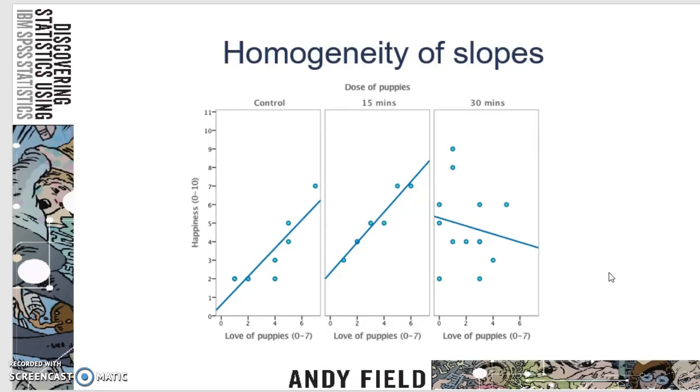In other words, do the slopes look the same? It's the relationship between the dependent variable and the covariate is the same in all the groups, and that is what you want when you have a covariate.